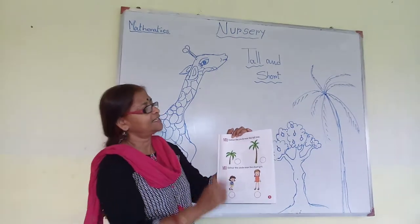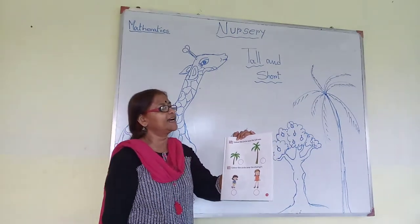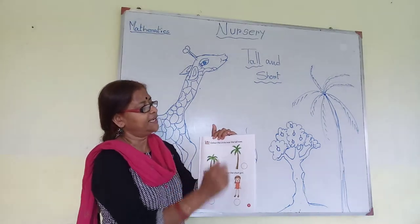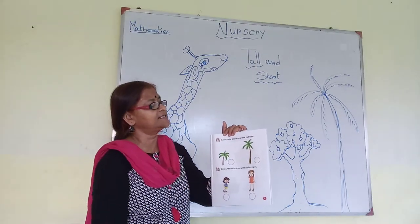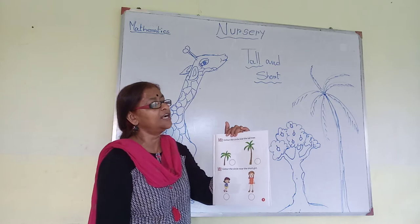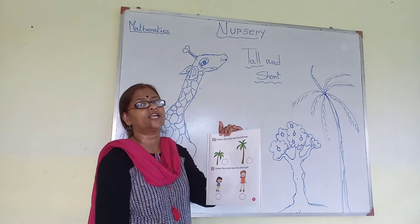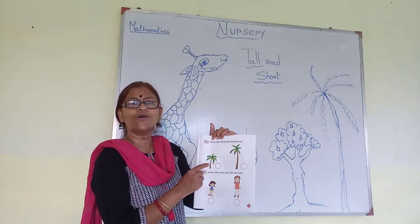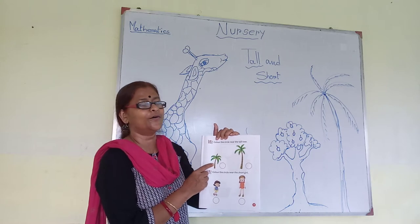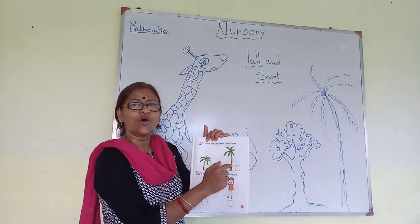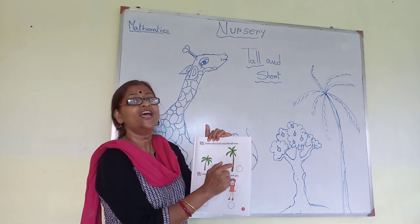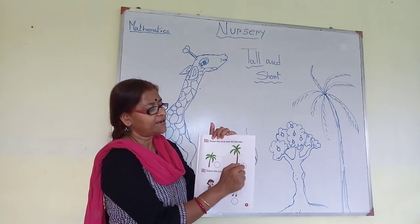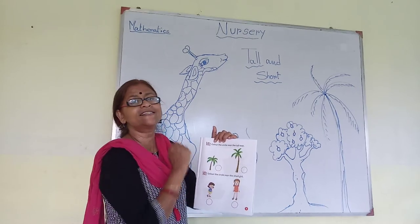Here, color the circle near the tall tree. The heading is: color the circle near the tall tree. Which is tall? Is it this tall tree? No. This is the tall tree. So, we will color this circle.